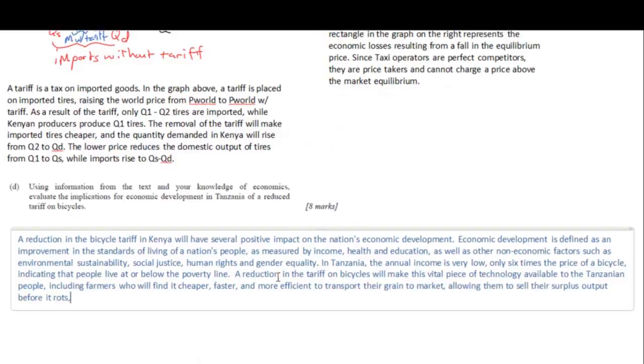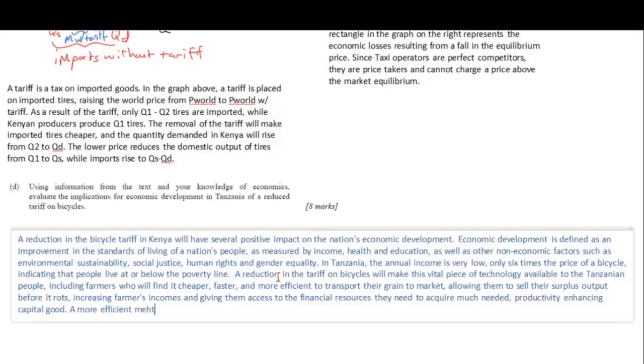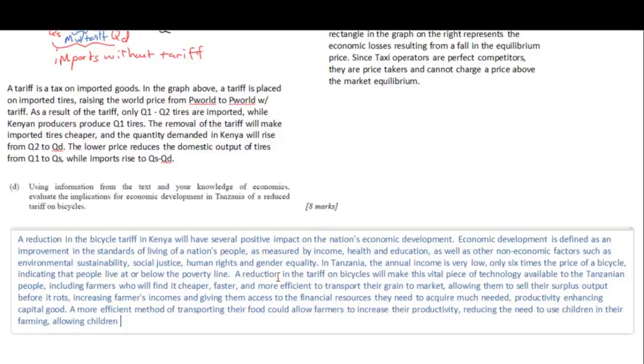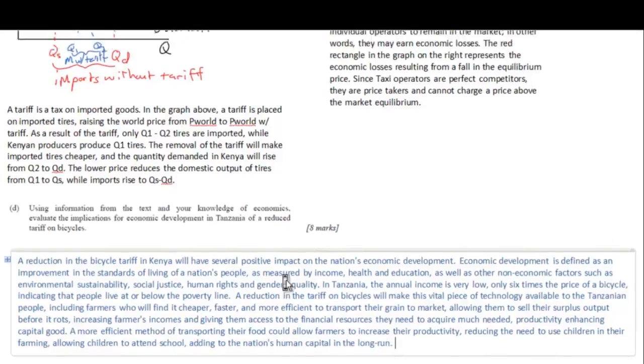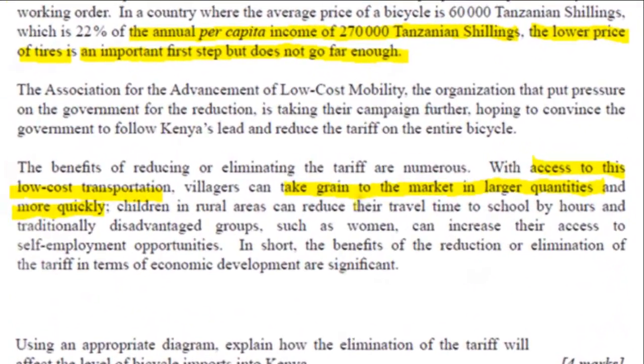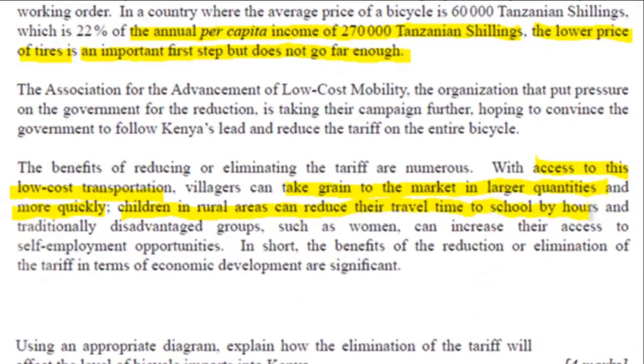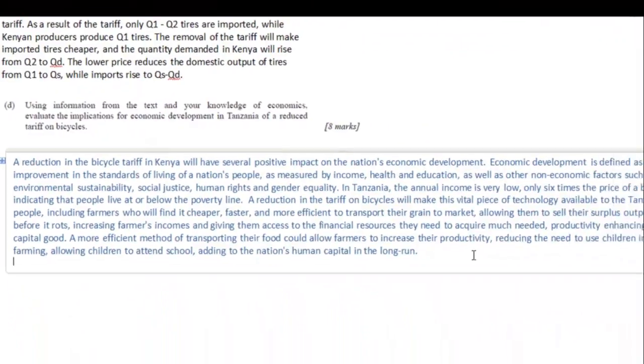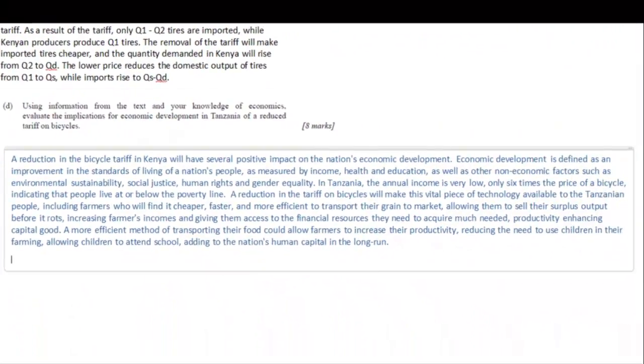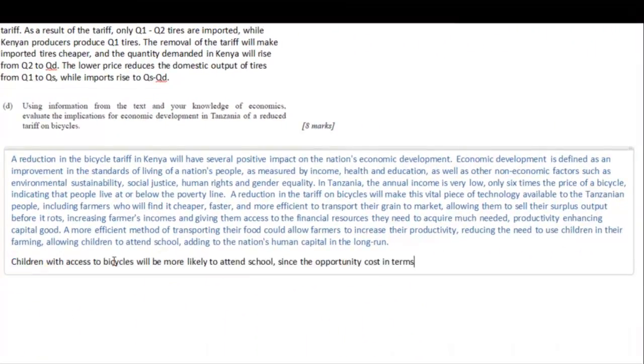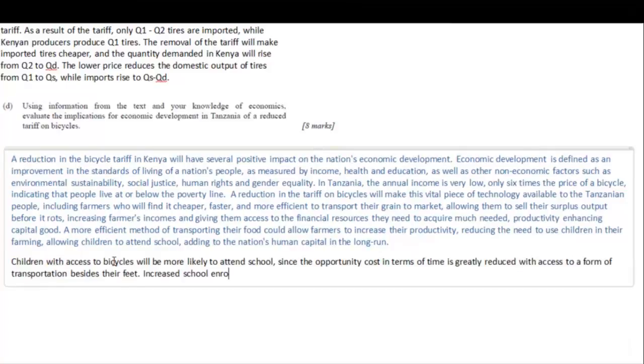And then I find some specific examples of how lower bicycle prices will benefit the level of economic development in Tanzania. So I'm referring to children's access to school, businesses' access to markets, and I refer to the role of women in Tanzania. So disadvantaged groups such as women can find more employment opportunities. And I give a specific example of the type of employment opportunity that a bicycle might present women in Tanzania.